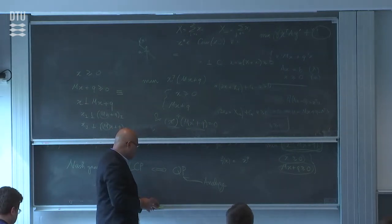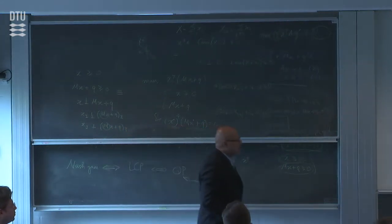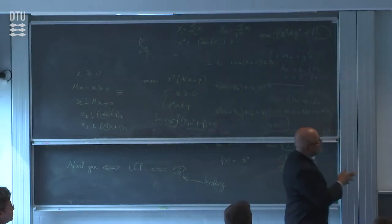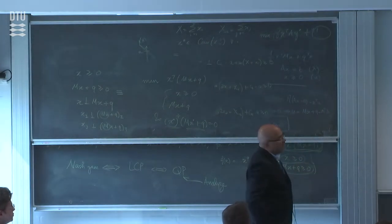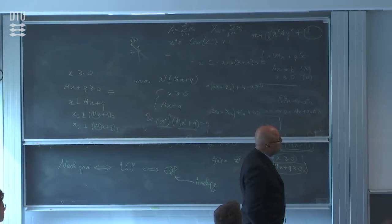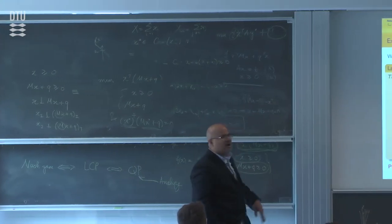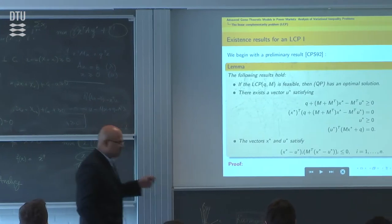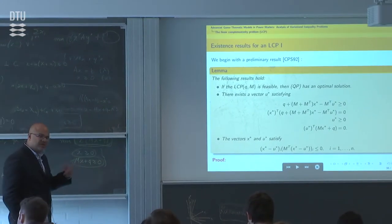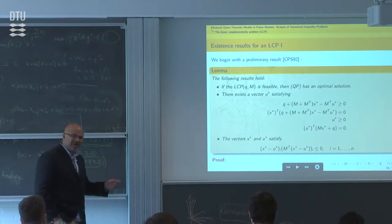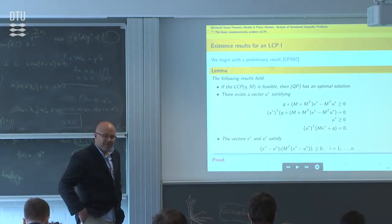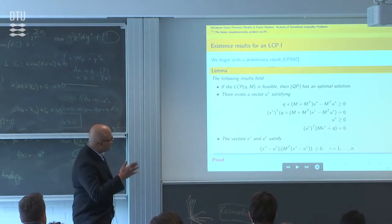Now it's worth noting that if you want to show feasibility — for uniqueness we went through the same process — now for existence we will follow a similar trajectory. Remember, it's not as straightforward as just looking at the QP and saying the QP's optimality conditions are the same. You need some properties. You can't take an arbitrary LCP and just consider the related QP.